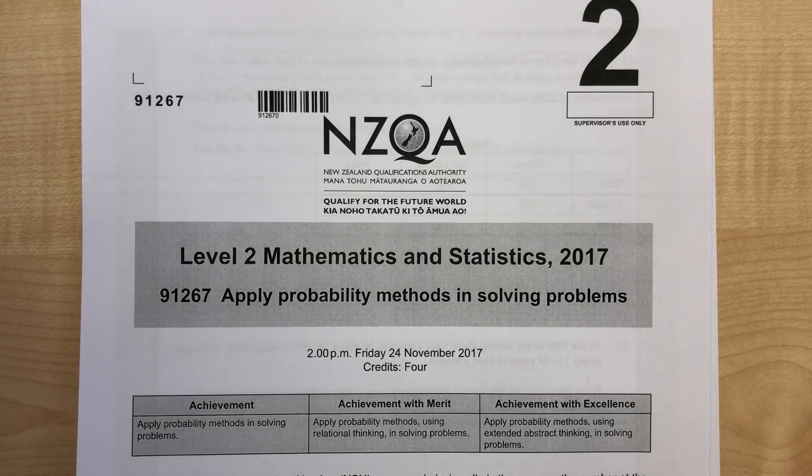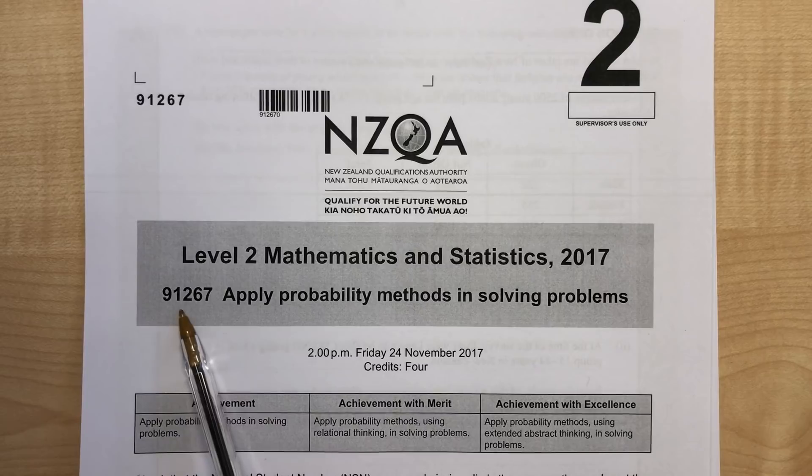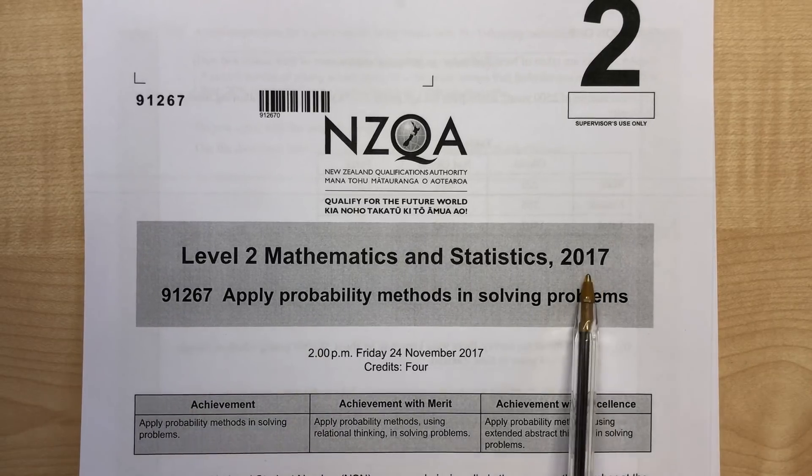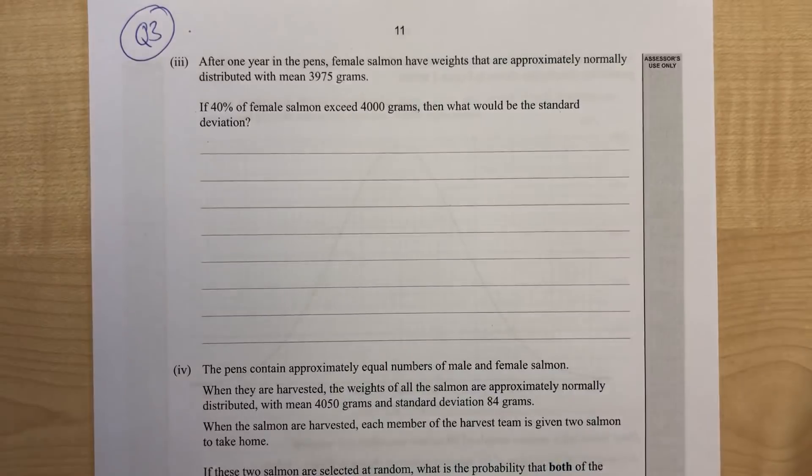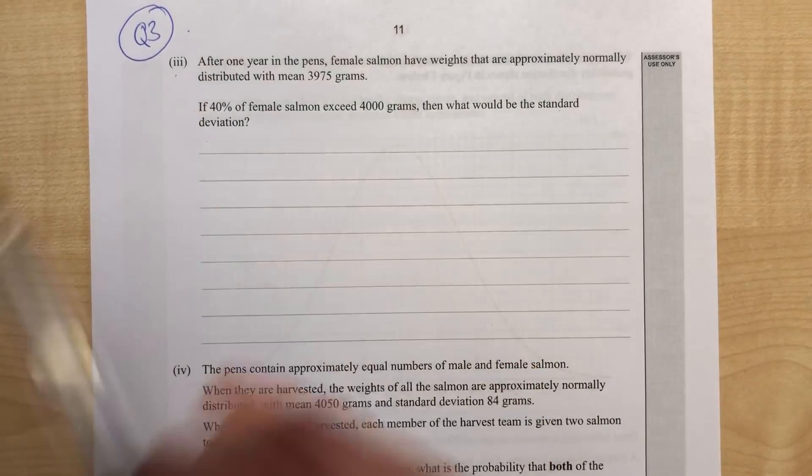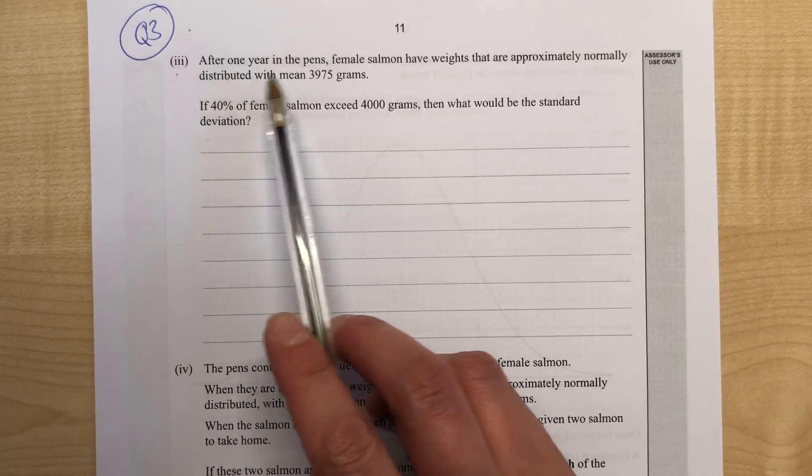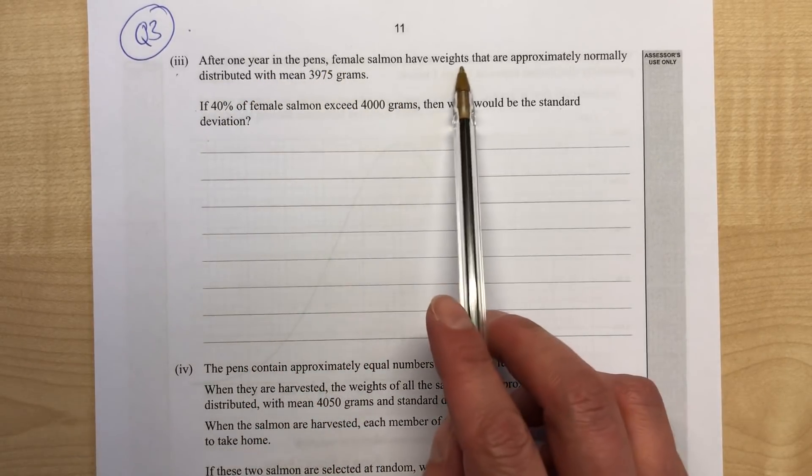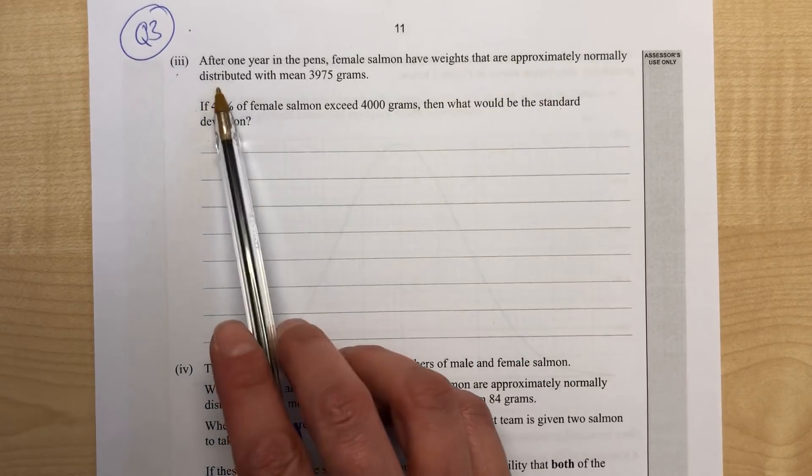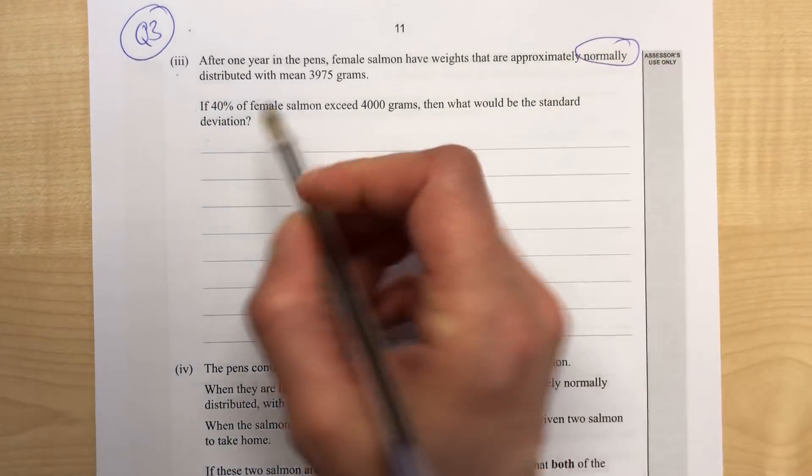This video is carrying on with the 91267 probability paper from 2017, and we're on question 3. This is part 3 of question 3, and it was talking about salmon.